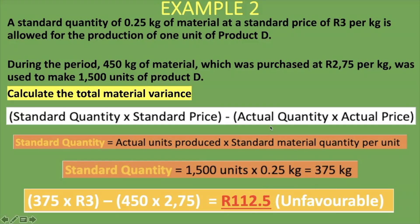When you calculate, always start with your standards before your actuals. If the answer on your calculator is negative, you know it's unfavorable automatically; if positive, it's favorable. As verification: if you calculate the material price variance and material quantity variance separately for this example and sum the two, it should give you the exact same answer of 112 rand 50 cents. I hope this has made sense and you've gained value from this lesson.